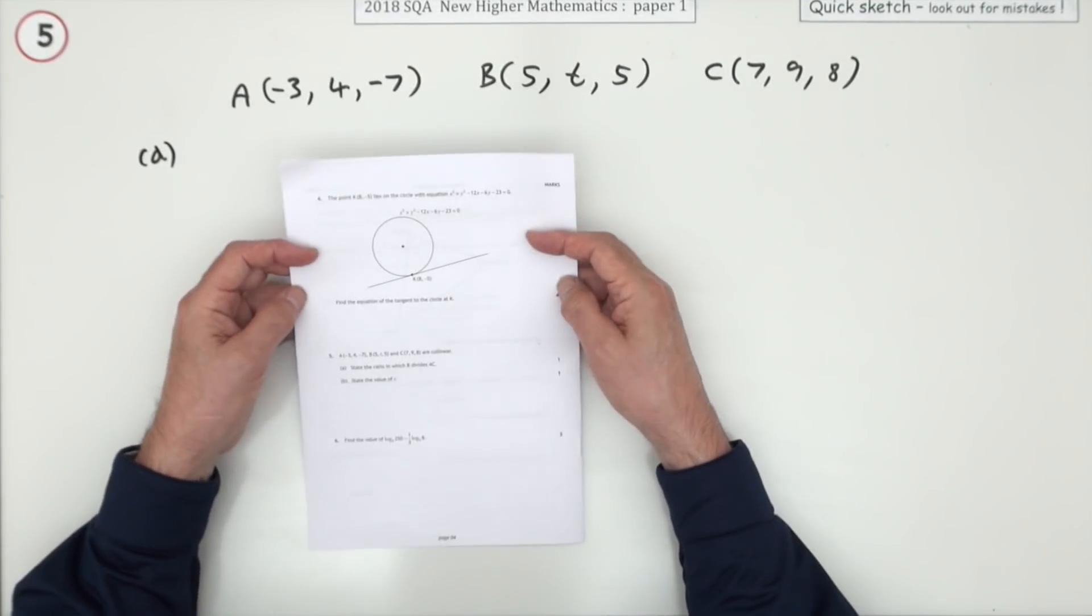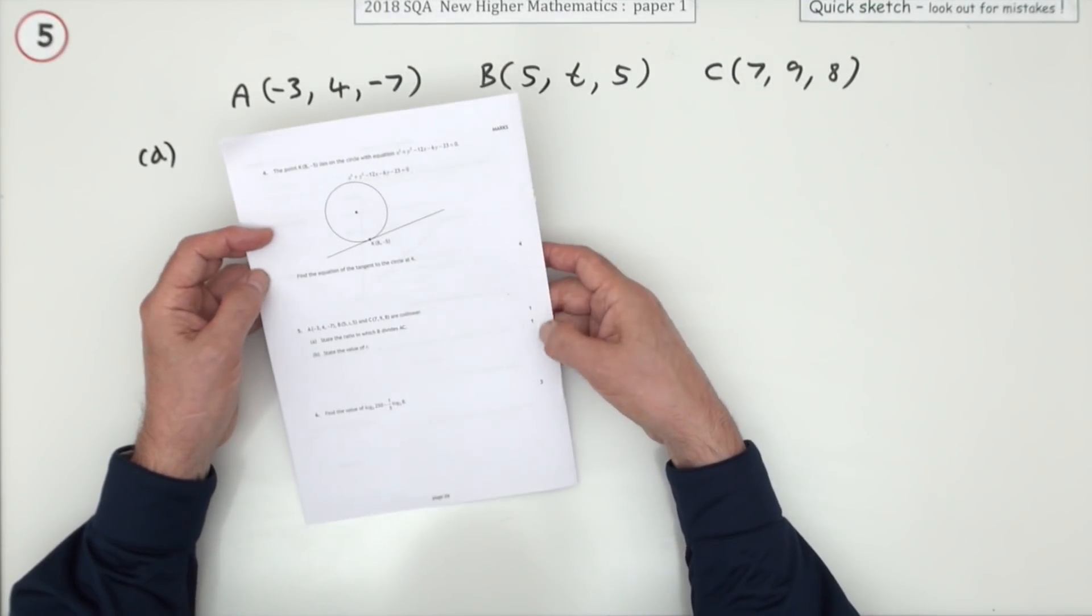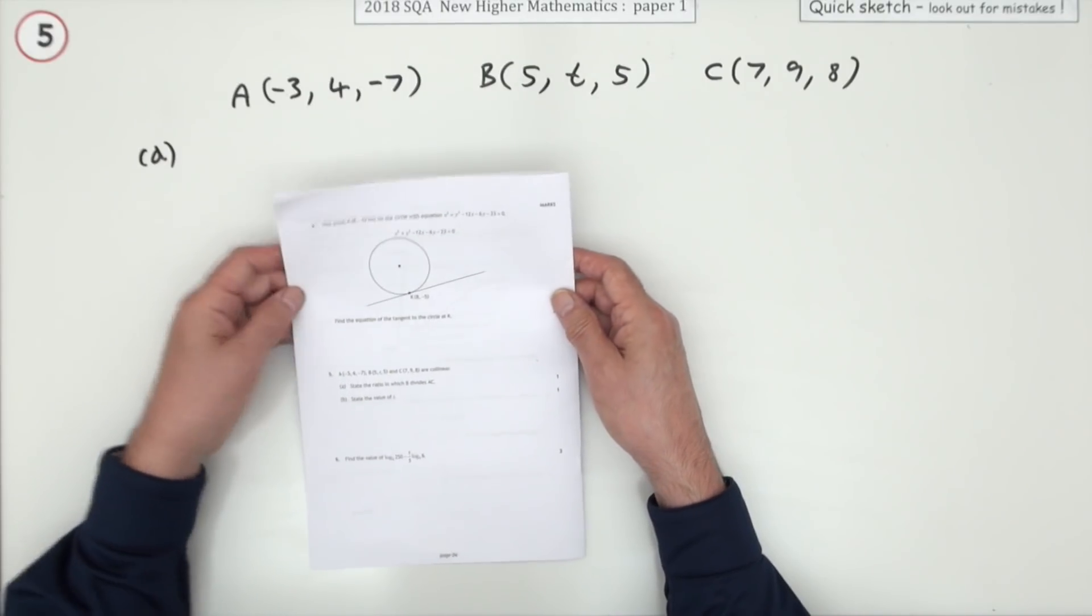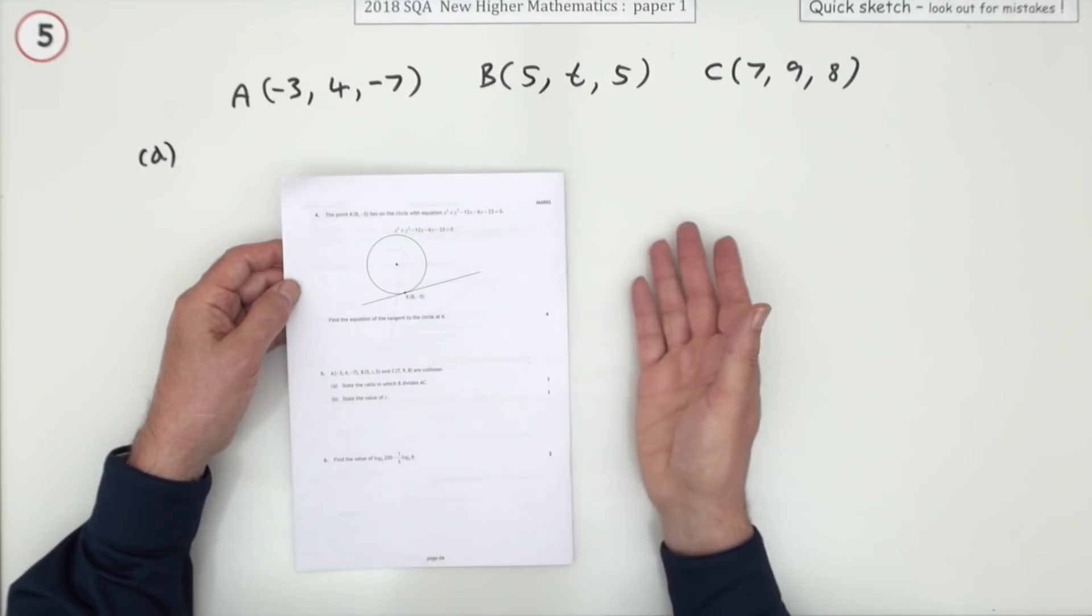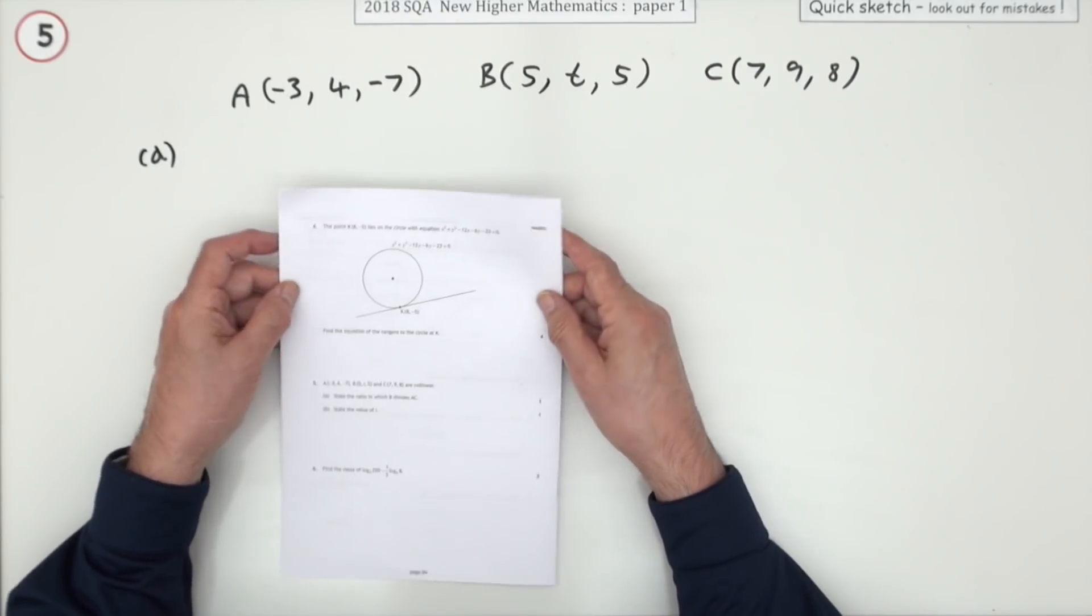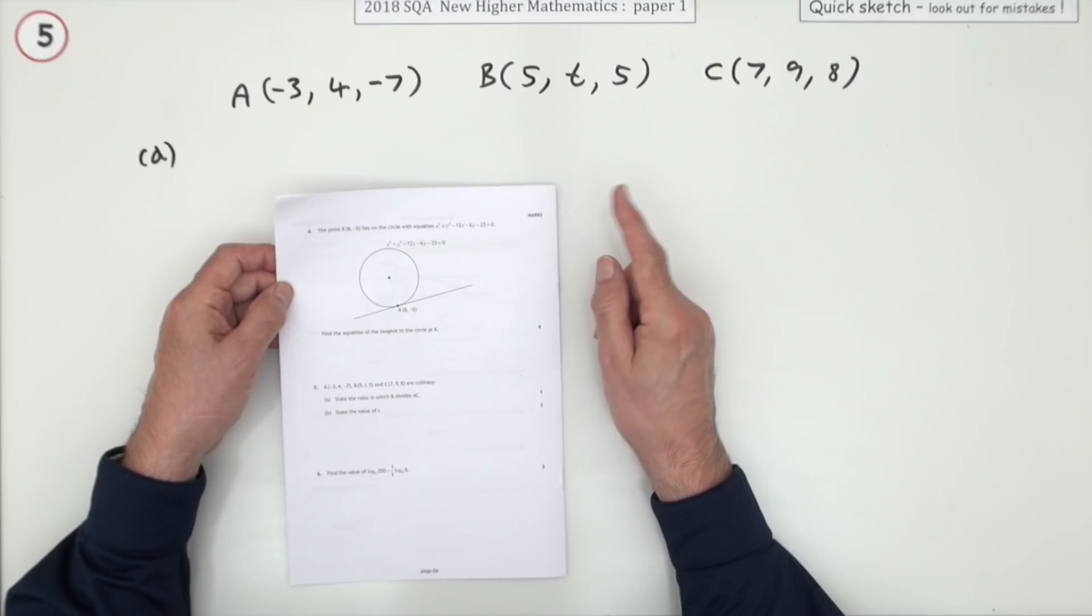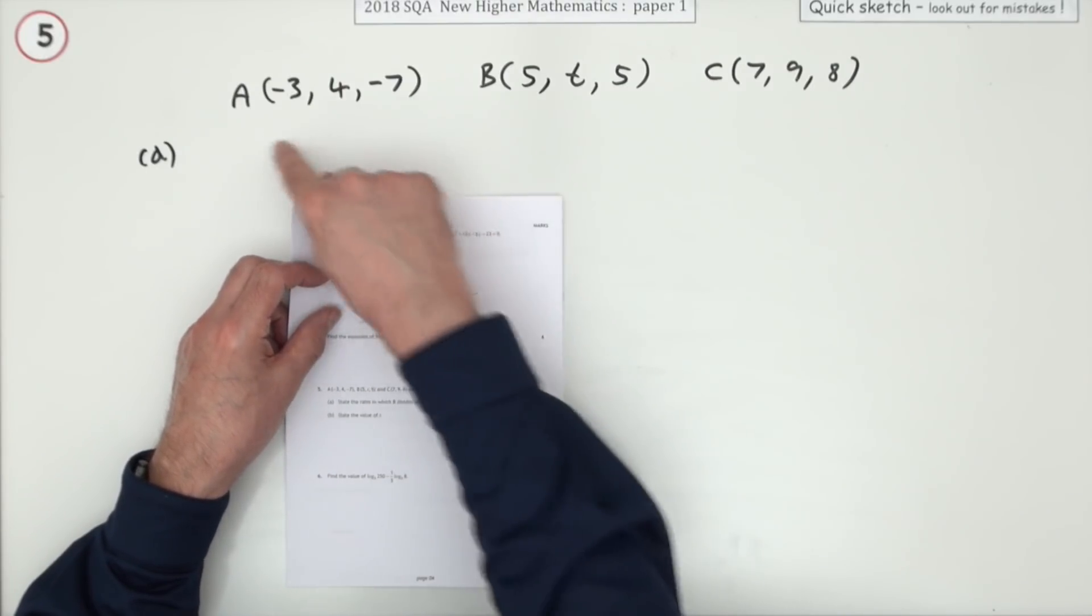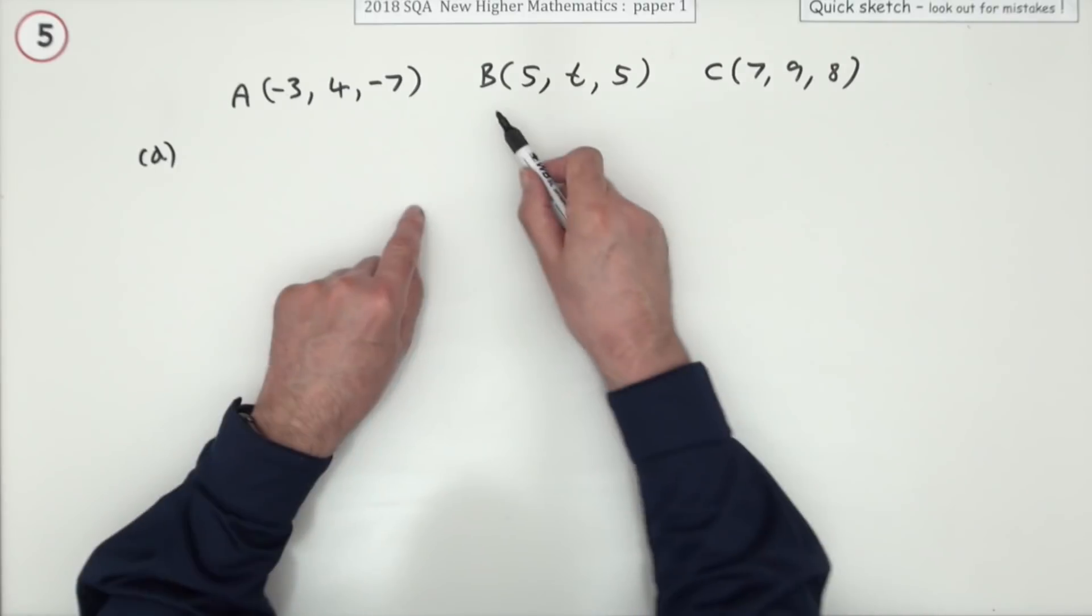Number five from paper one of the 2017 higher maths, just a little two-mark question here for collinear points. Two parts, one mark each. It just says 'state,' so you just write the answer down, doesn't need any working, though you should probably work it out. First part is: state the ratio in which B divides AC.